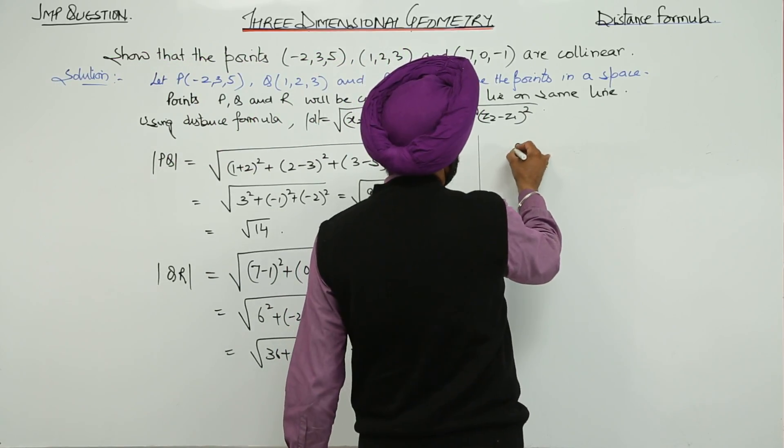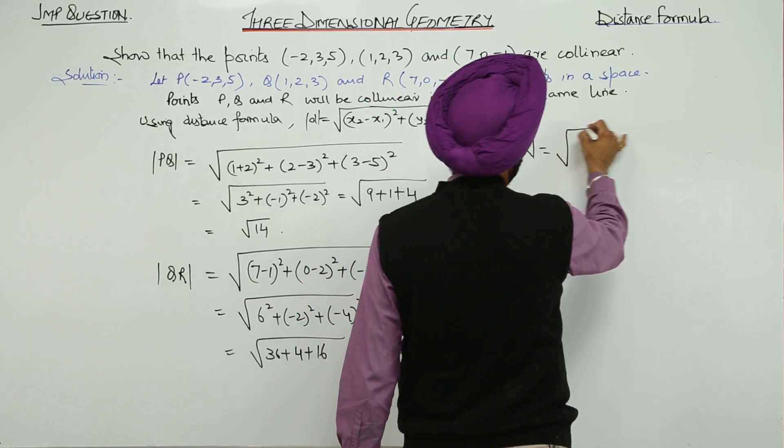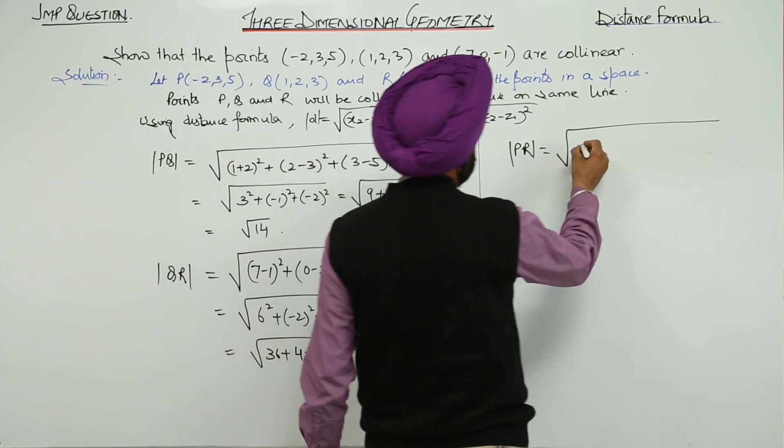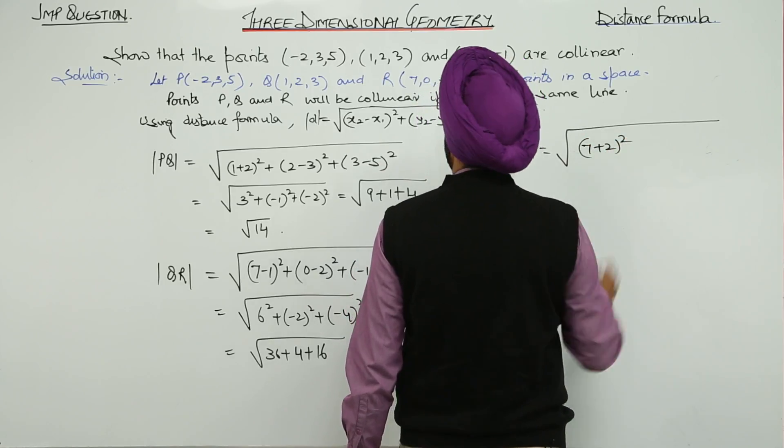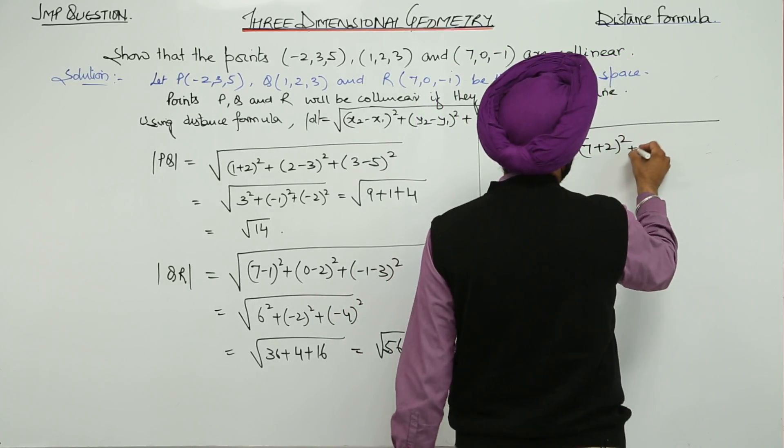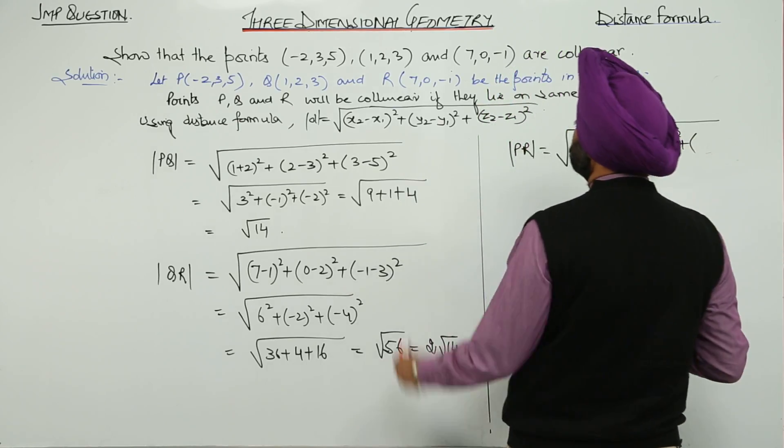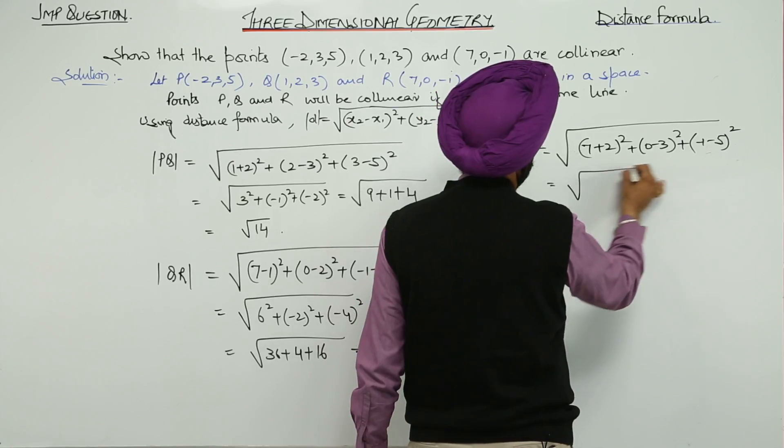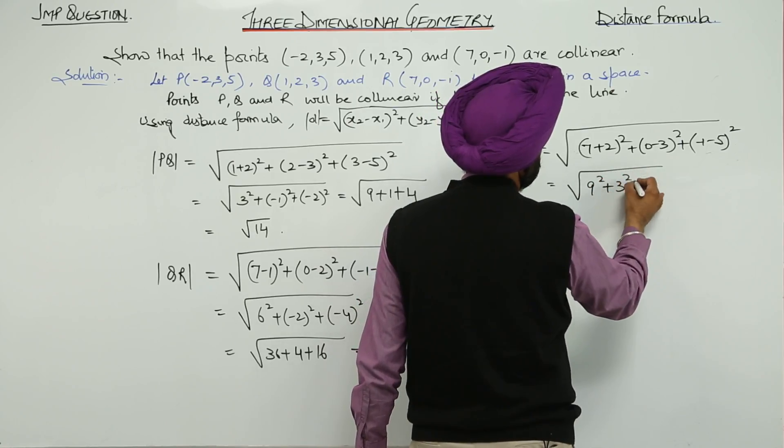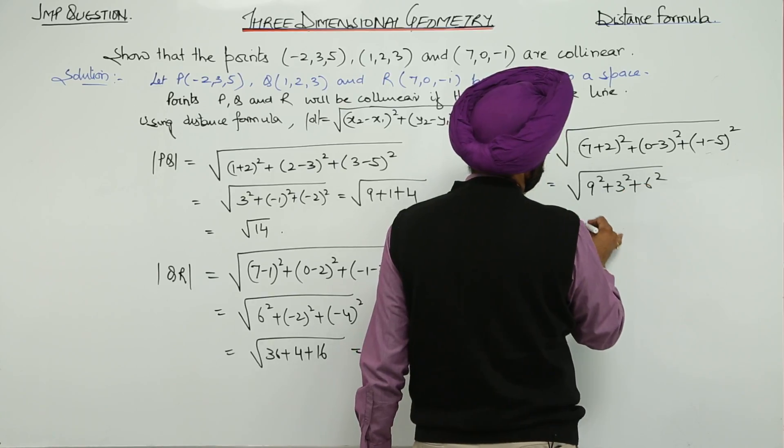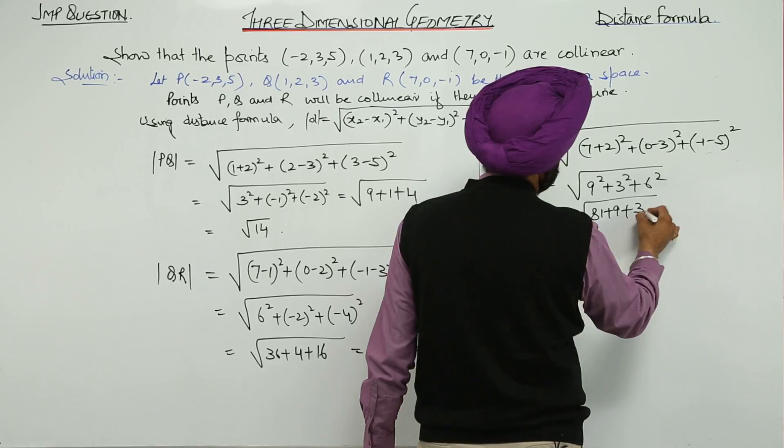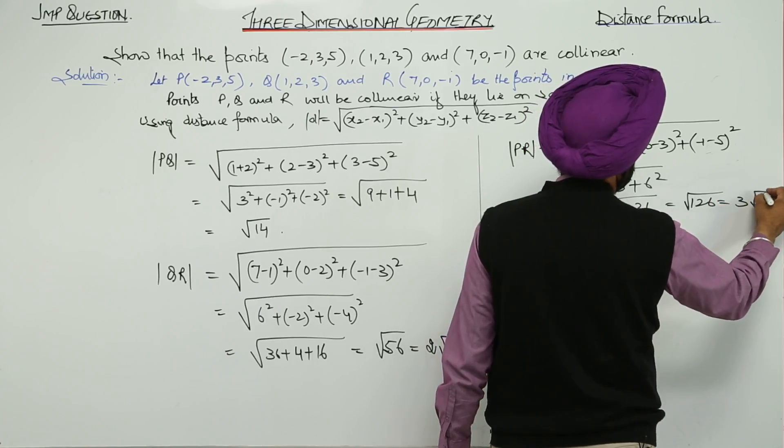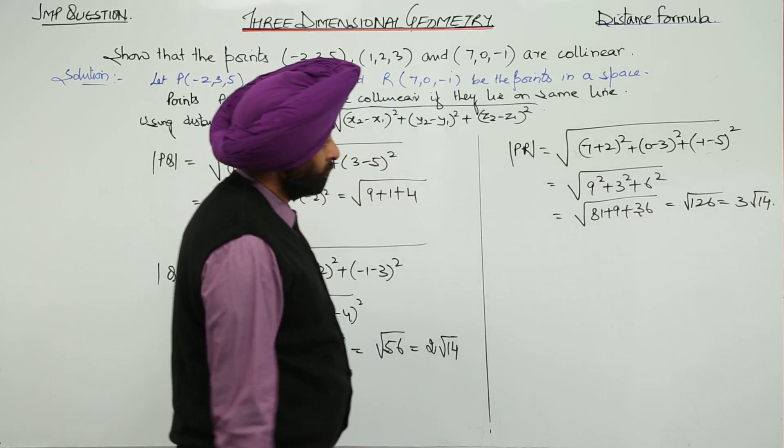We are left with PR. P and R, this point and this point. (7 plus 2) whole square, then (0 minus 3) whole square plus (negative 1 minus 5) whole square. 9 square plus 3 square plus 6 square: 81 plus 9 plus 36, this is 90 plus 36, under root 126. This becomes 3 under root 14.